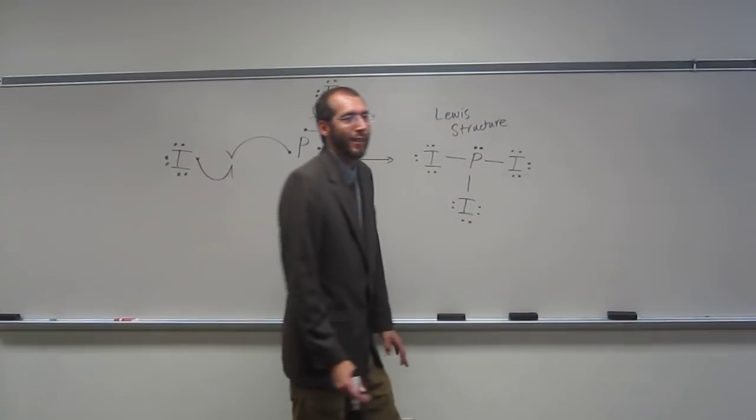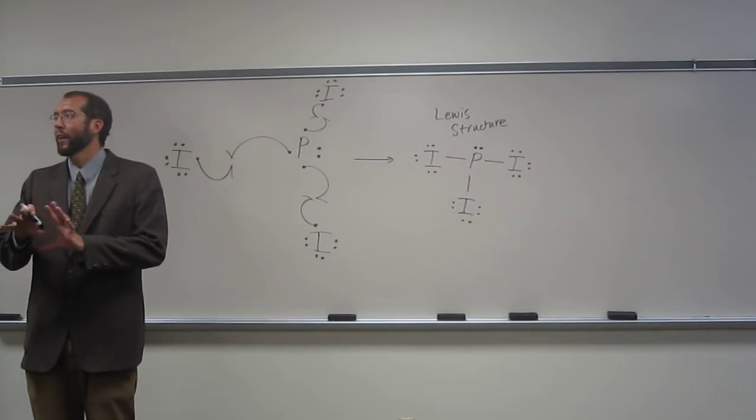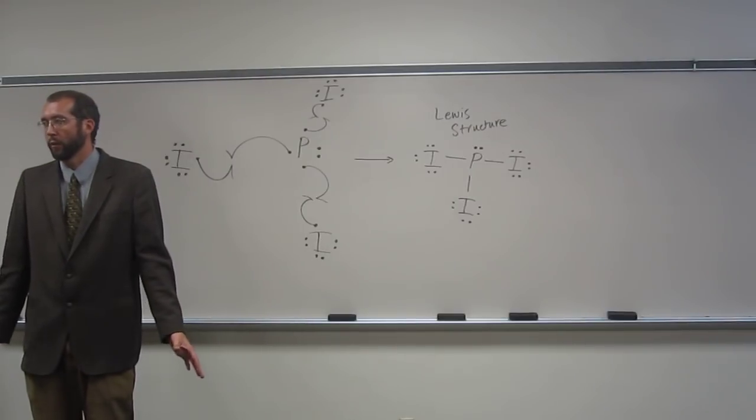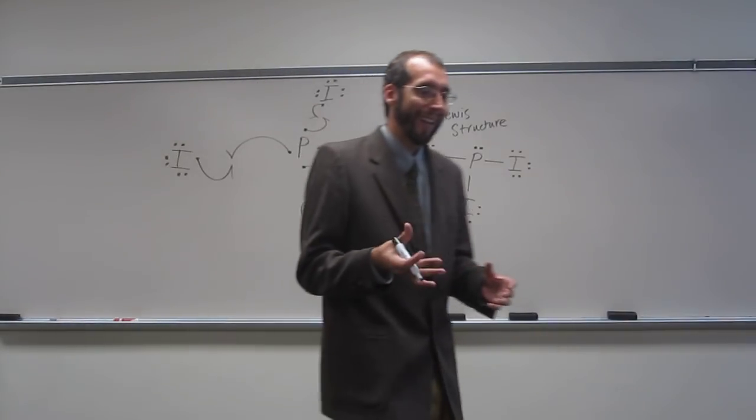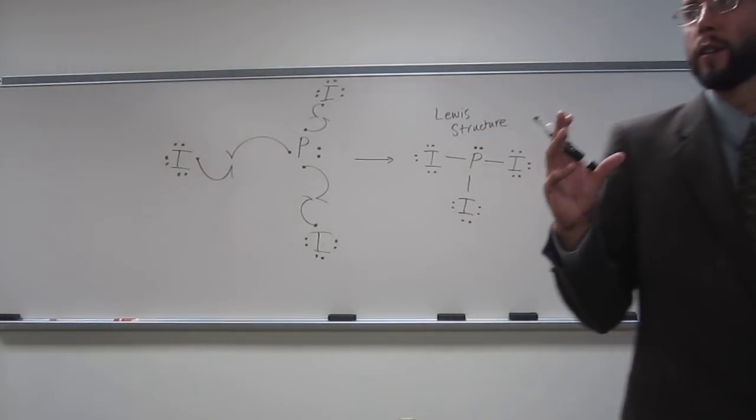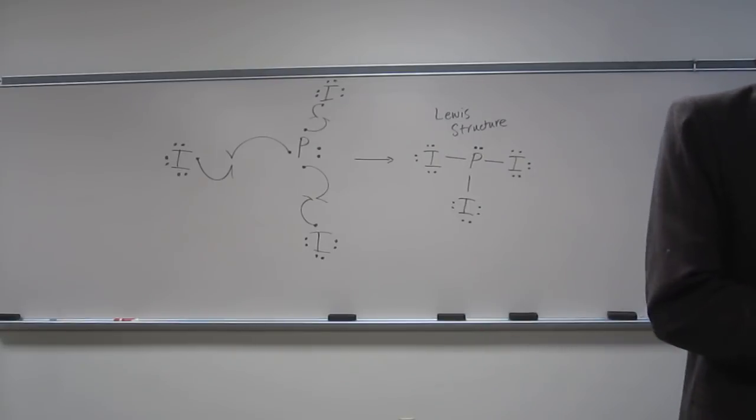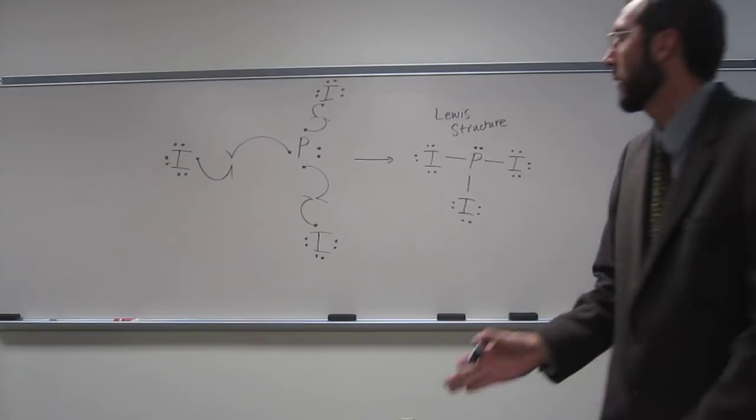So why does it look like that instead of like a T? It's because those electrons want to be moved as far away from each other as possible. And VSEPR theory states that because they're negatively charged, right, they don't like to be in the same area as each other. You've got two negatively charged things kind of bouncing away.